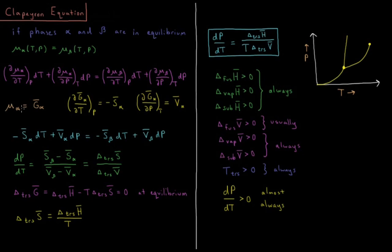For a given phase, the chemical potential is equal to the molar Gibbs energy of that phase. The partial derivative of the molar Gibbs energy with respect to temperature is equal to the negative molar entropy of that phase, and the partial derivative with respect to pressure at constant temperature is equal to the molar volume. So we now have: minus S̄_alpha dT plus V̄_alpha dP equals minus S̄_beta dT plus V̄_beta dP. The changes in temperature and pressure must be matched by the molar entropies and molar volumes of the respective phases.